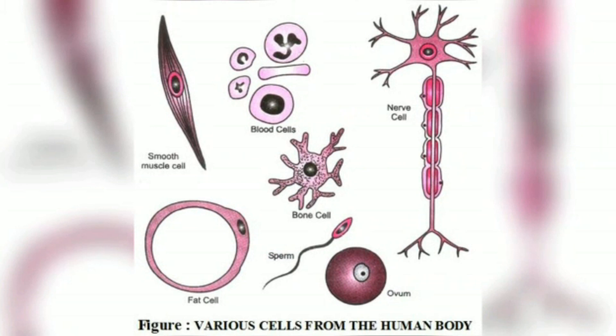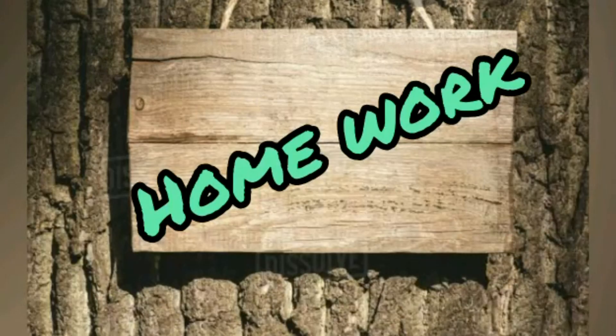Let us learn about the different shapes of cells. In this picture, you can see smooth muscle cell, blood cells, nerve cell, bone cell, sperm, ovum, and fat cell. These are the different shapes of cells present in the human body.